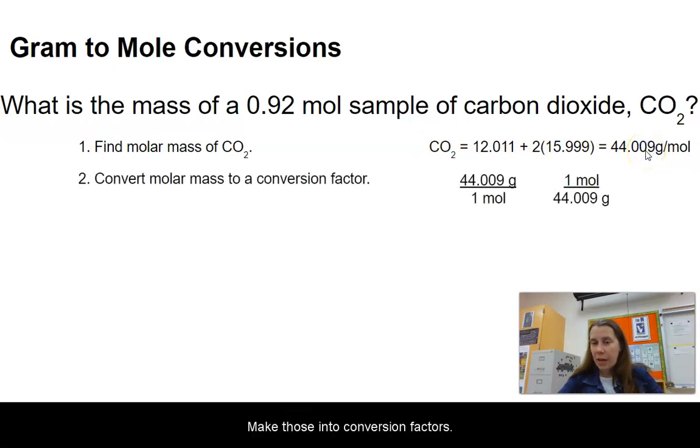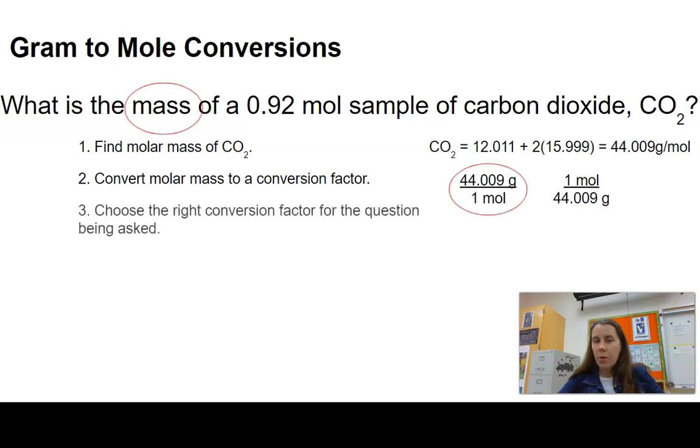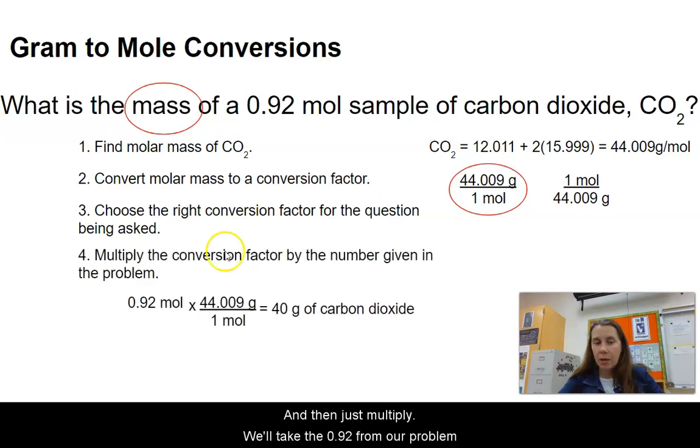Make those into conversion factors. We're looking for mass, so we're going to choose the conversion factor that has grams in the top, because grams is mass, and then just multiply. We'll take the 0.92 from our problem up here, times the conversion factor we identified, to get 40 grams of carbon dioxide.